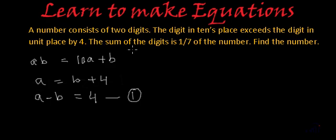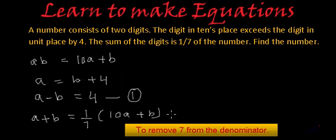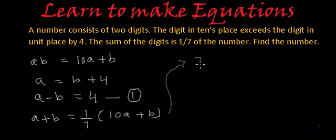Next they are saying the sum of the digits is 1/7th of the number. So the sum of the digits is A plus B, and this is 1/7th of the number. What is the number? Number is 10A plus B. And now let's do one thing. Now let's multiply both the sides of this expression by 7. We will get 7 times A plus B will be equal to 7 times 1/7 times 10A plus B.